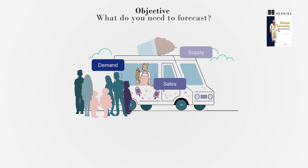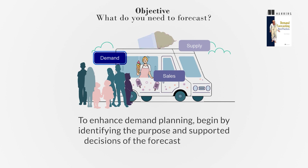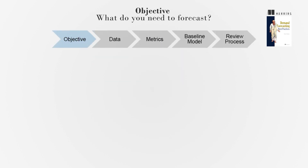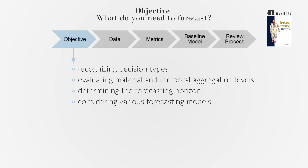The goal of forecasting is to provide information for supply chain teams to make intelligent decisions. To enhance demand planning, begin by identifying the purpose and supported decisions of the forecast, which will also determine its users. The five-step framework involves recognizing decision types, evaluating material and temporal aggregation levels, determining the forecasting horizon, and considering various forecasting models and processes for different teams.